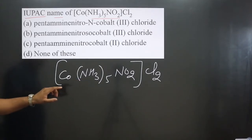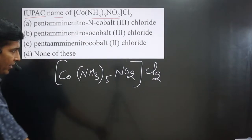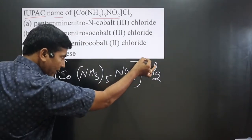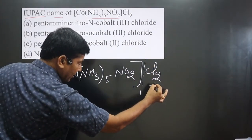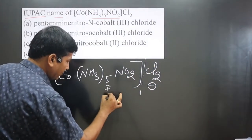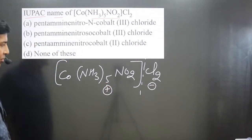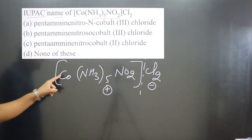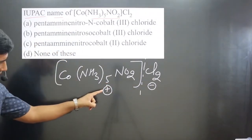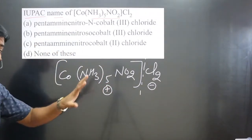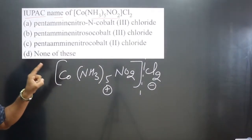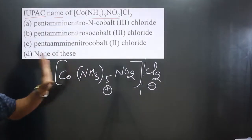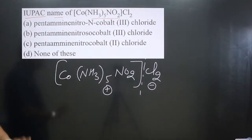You can see cobalt is there. If you break this complex, this part is the negative part and this part is the positive part. So the central metal atom is present in the cationic complex. It means we use its common name as given in the periodic table — cobalt.